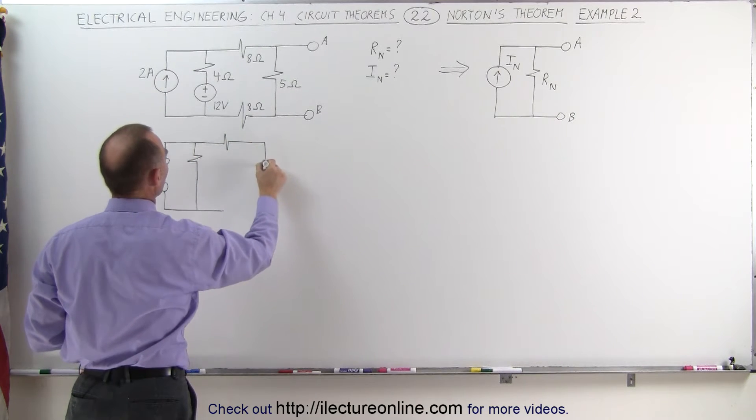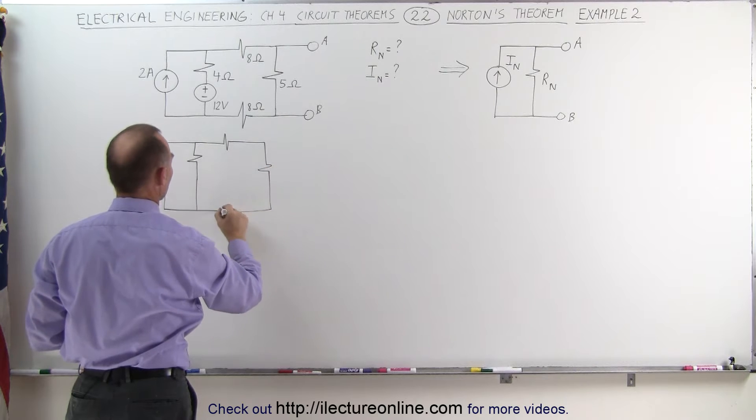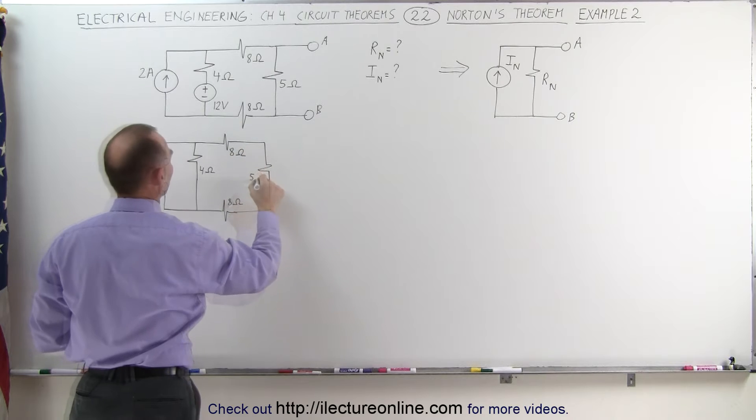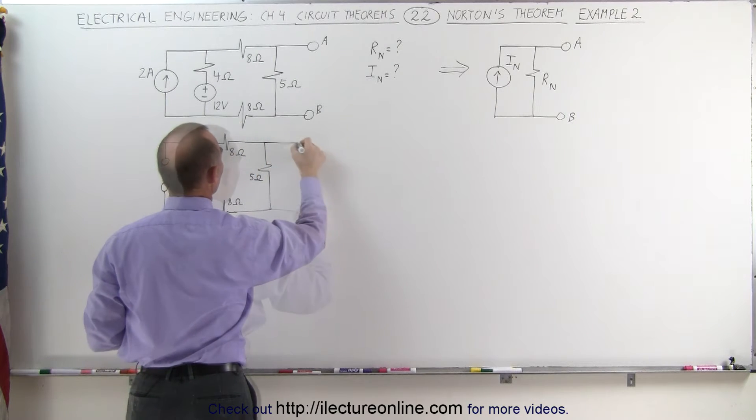We have the 8 ohm resistor, we have the 5 ohm resistor and here we have another 8 ohm resistor. That's 4 ohms, 8 ohms and 5 ohms and then we still have terminals A and B.